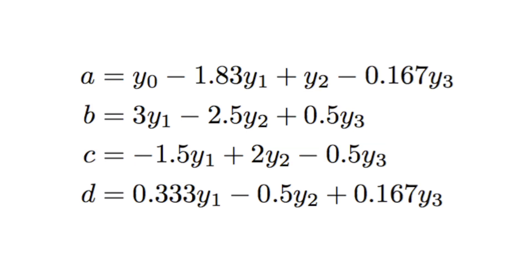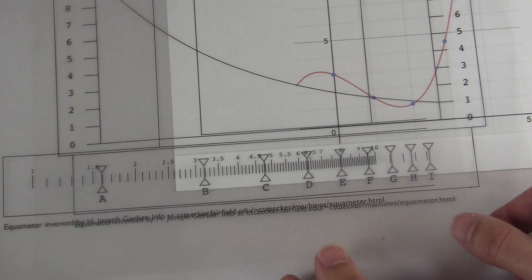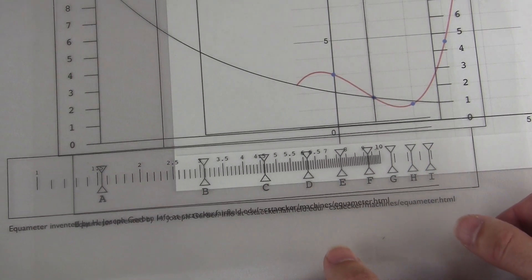And now this is a system of equations that you can easily solve in terms of the y values. Like just look at the second formula there. What this means is you can find b by multiplying each y value by those different numbers and then adding it all together. And this is actually what the equimeter is doing when you line up those curves.